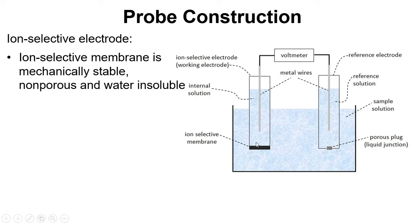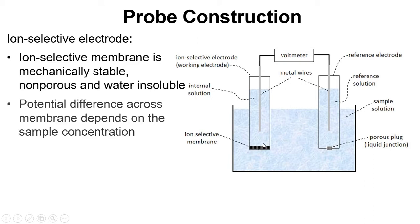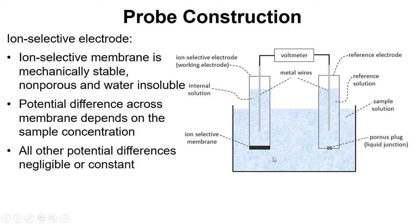We need a very specific interaction with just the ion that we're interested in. Now the potential difference across this membrane depends on the concentration of the analyte ion in the sample solution. And all the other potential differences are either negligible or constant.